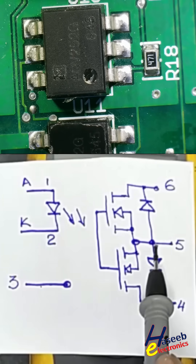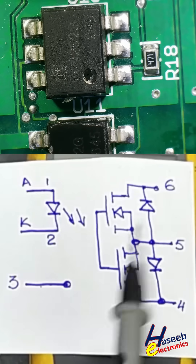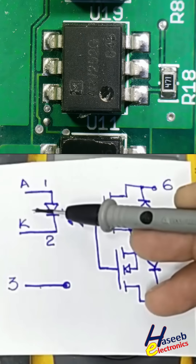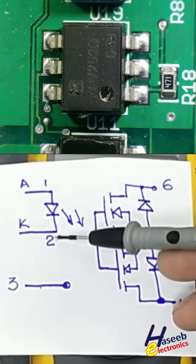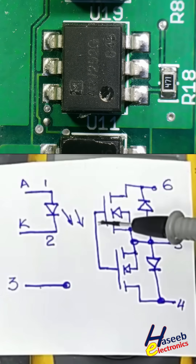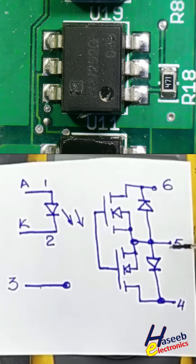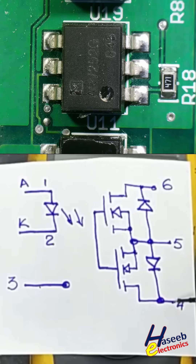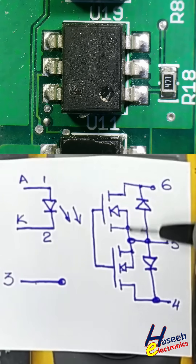Source pin is common. These are N-channel MOSFETs. When it receives forward current to the LED, it will turn on its gates, allowing current between pin number 5 to 6, or 5 to 4. It will turn on the channel between 4 to 6.